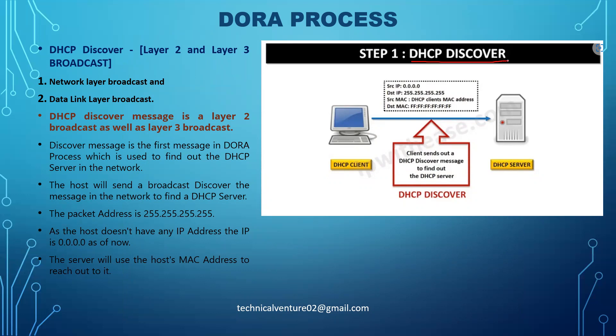The first message is the DHCP Discover message. If someone asks which messages are broadcast and which are unicast, the first message — DHCP Discover — is a broadcast message. At this stage, the client is discovering or requesting an IP address and other details from the DHCP server, so this message will be a broadcast.